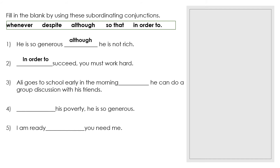Number three: 'Ali goes to school early in the morning' so 'he can do a group discussion with his friends.' The best answer is 'so that' — the benefit you get after doing something. Number four: 'His poverty' and 'he is so generous' — you use 'despite': 'Despite his poverty, he is so generous.' Number five: 'I am ready whenever you need me' — using 'whenever' to indicate any time you need the speaker, they are ready.